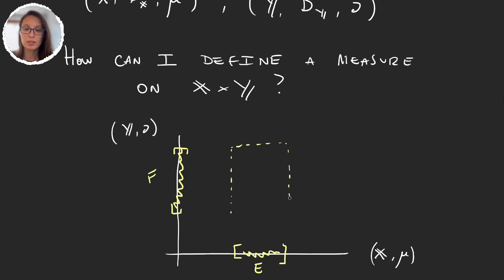So I'm going to have what's called a rectangle, but of course these are abstract spaces, so this is just a picture. This is the set E times F. Well, I want to be able to measure this set, and we know that if we're working on the plane, then rectangles, the area of a rectangle is the product of the basis times the length of the height.